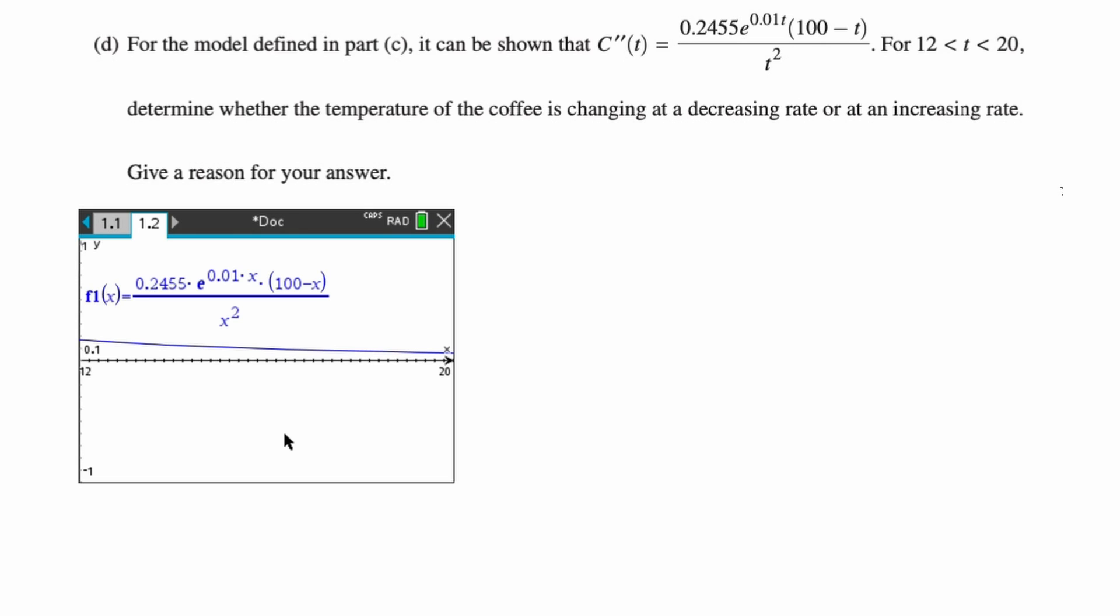I changed my window from 12 to 20. It was pretty clearly above the axis. But I still changed my Y values from negative one to one, just to see it a little bit better. You can see 0.2455 e to the 0.01x(100 minus x) over x squared. You have to use x when you're graphing, at least on the TI-Nspire, or it will not graph for you.